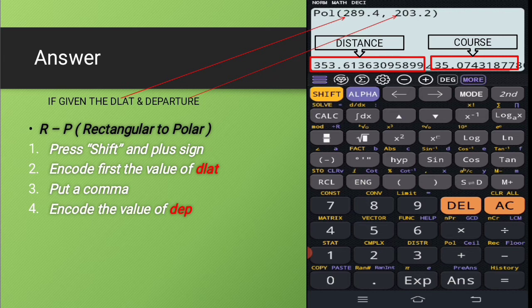So we have here the first step, which is to press the shift button and the plus sign button, which will result in the word pole in the monitor of your calculator. You have there the word pole plus the open parenthesis.